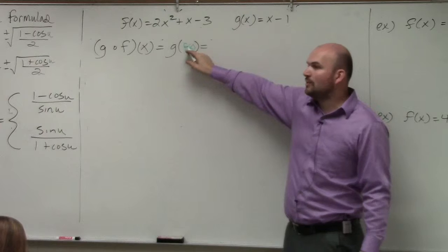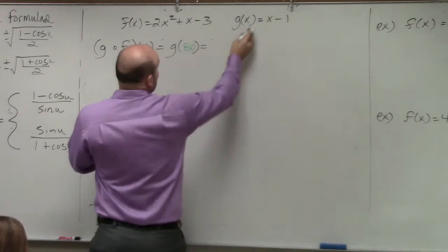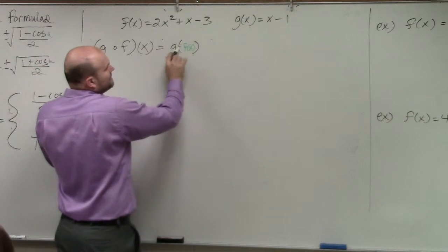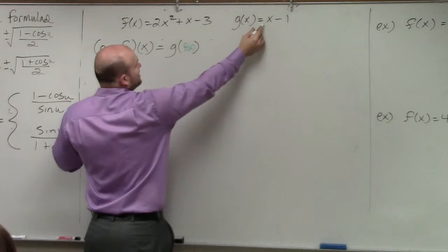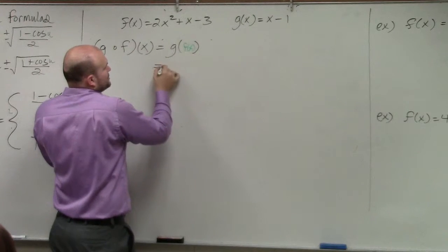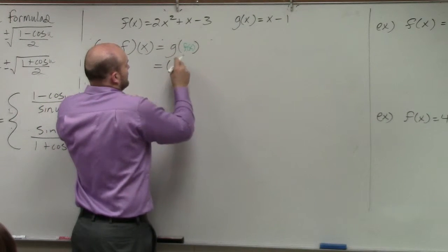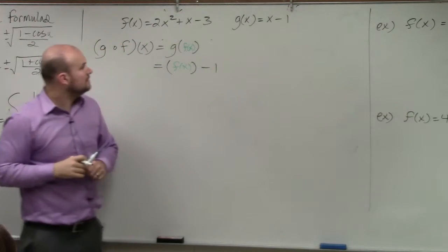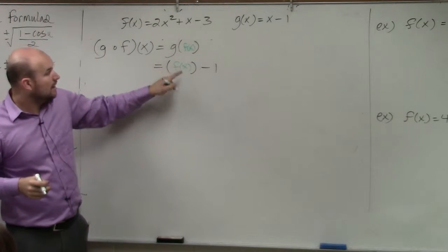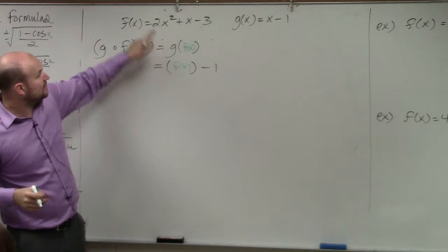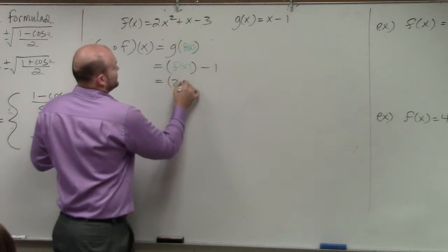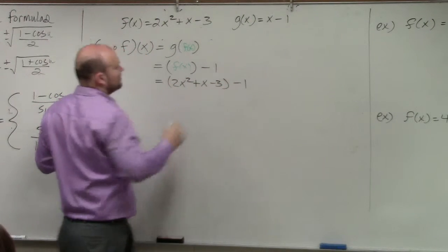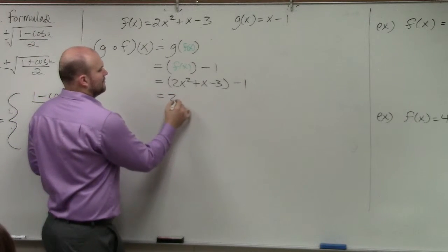All I'm simply doing is instead of my input value — for g of f of x — wherever I have an x, I'm going to plug in f of x. So in reality I really have f of x minus 1. Now, what is f of x actually equal? Well, that's this expression over here, so that's going to be 2x squared plus x minus 3, minus 1. Now can I simplify this? Sure, of course you can.